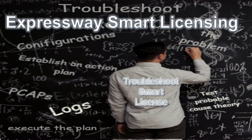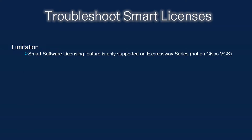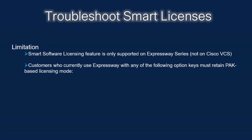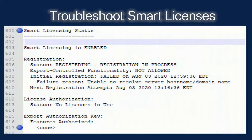Let's continue on to the Expressway smart licensing troubleshooting. First, there are some limitations: the Smart Software Licensing feature is only supported on the Expressway series, not the VCS. Customers who currently use Expressway with any of the following option keys must retain PAC-based licensing mode: the Advanced Account Security option key, Hardware Security Module (HSM), or the Microsoft Interoperability option key. We have completed the smart licensing configuration for Expressway; however, the Expressway is still not registering or getting authorized to the CSSM server. What can we do to troubleshoot this?